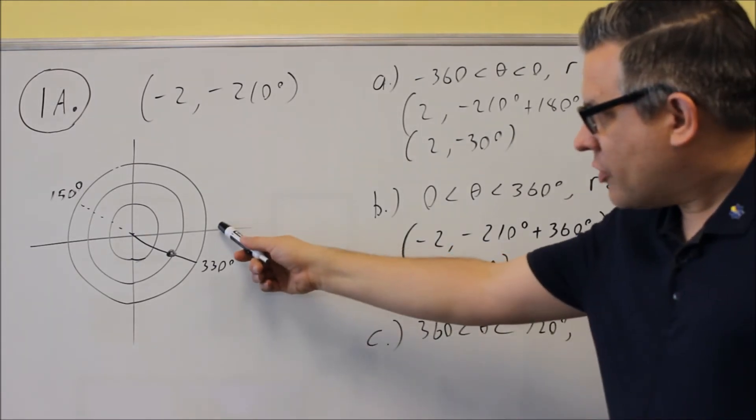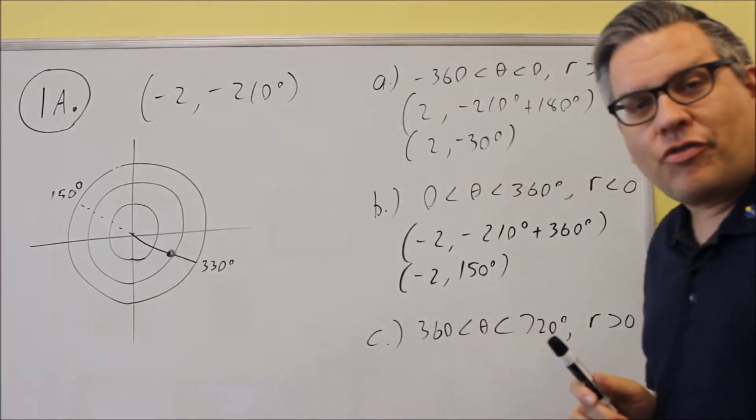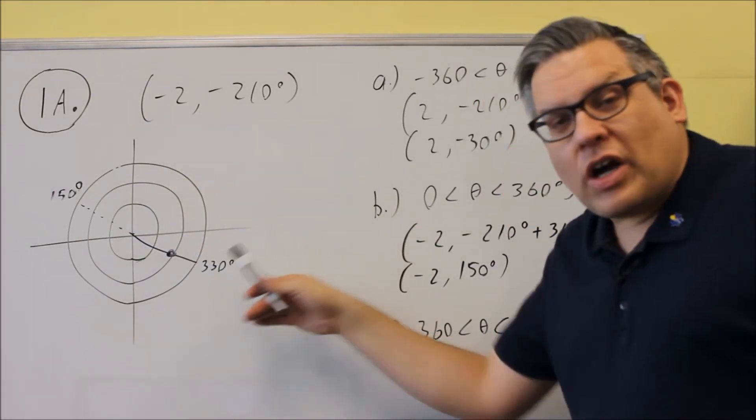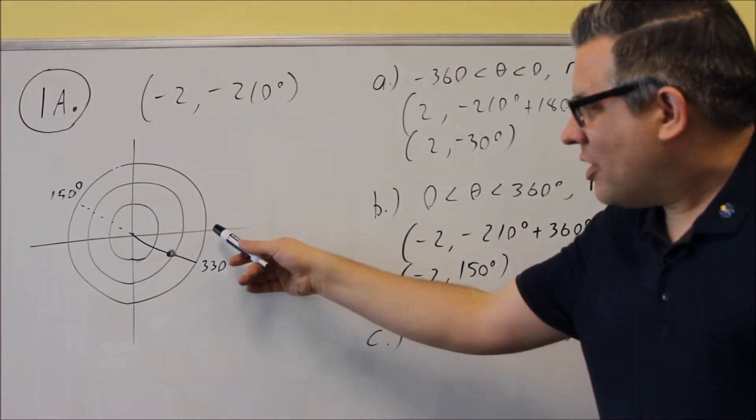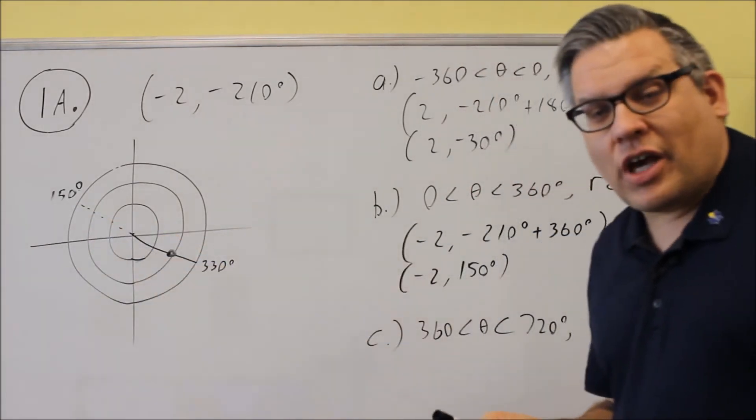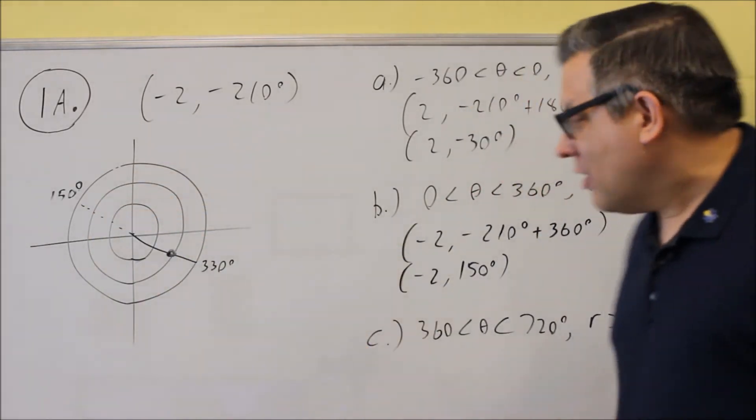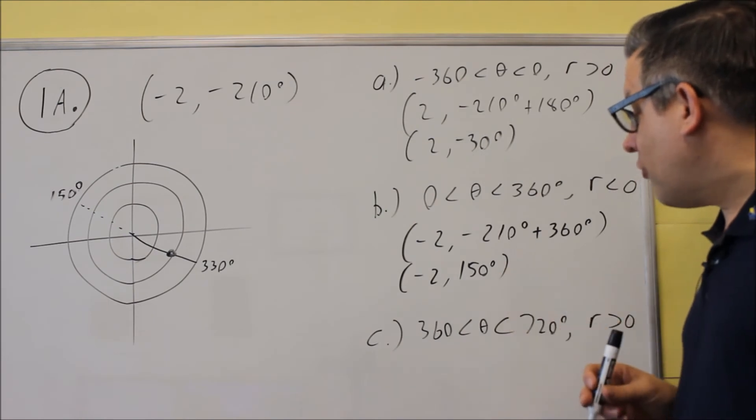And that makes sense because if you go around this way to 150 and then reverse it, you're still going to arrive at the same spot. So instead of going this way to get to that, we actually just went the other way instead. So that would be your answer, negative 2 and 150.